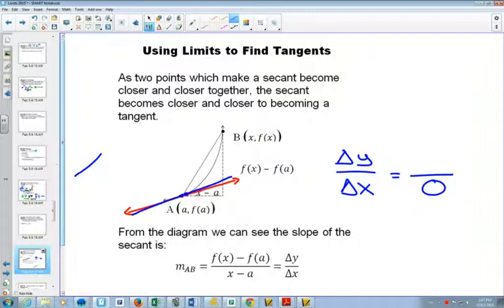And as you approach dividing by 0, and see what happens, as this change in x gets closer and closer to 0, you will get closer and closer to the slope of the tangent line, and be able to find the instantaneous rate of change, or the tangent, at that point.